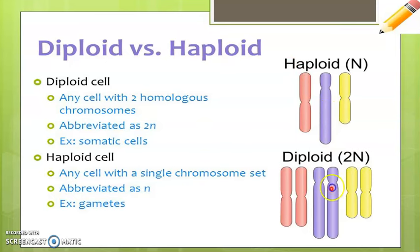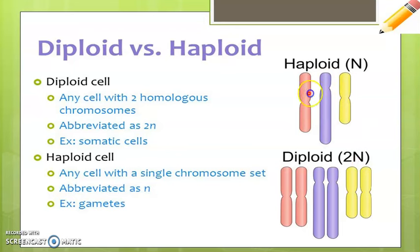Here's another slide showing the difference between diploid and haploid. On the diploid side, you have three pairs — two versions for each pair. On the haploid side, you just have n, or one version for each type.